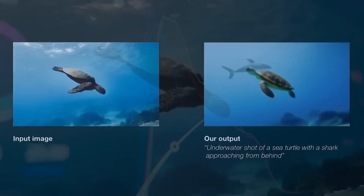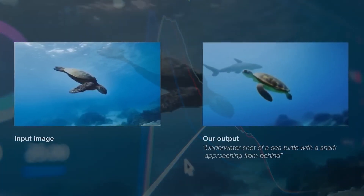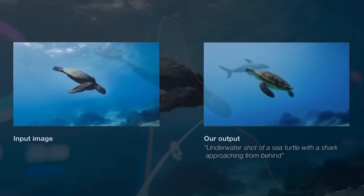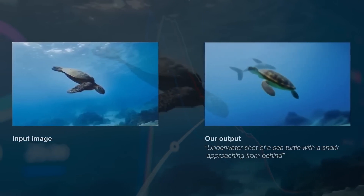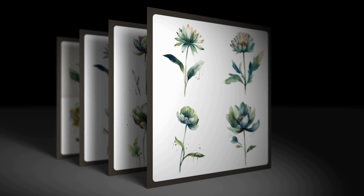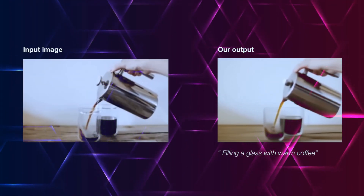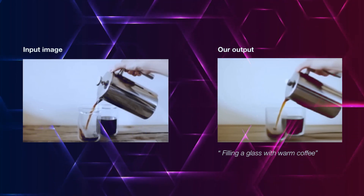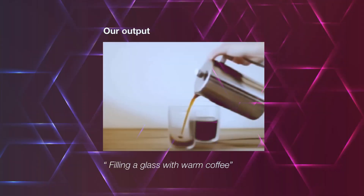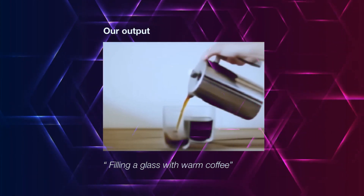In a similar fashion, here is a still image of a sea turtle, and with the instruction shown below — 'an underwater shot of a sea turtle with a shark approaching from behind' — the AI was able to analyze the image and add the required motion to the video. We have a second instance here with a still image of someone pouring coffee into a glass and the resulting motion picture on the right. The AI is able to add motion to the liquid and attempts to make the arm come alive.